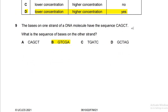Question nine: one strand of a DNA molecule has the sequence CAGCT. What is the sequence on the other strand? Remember the base pairing rules: A pairs with T, and G pairs with C. Match one by one — C pairs with G, A pairs with T, G pairs with C, C pairs with G, T pairs with A — giving GTCGA. Make sure to match all letters carefully; just matching one and assuming the rest is correct is a common mistake. The answer is D.